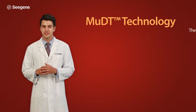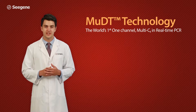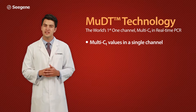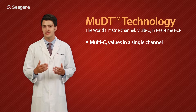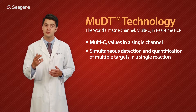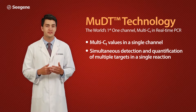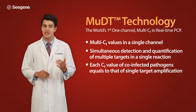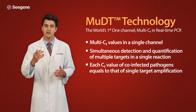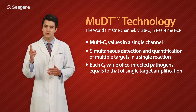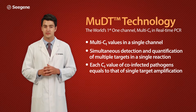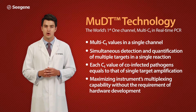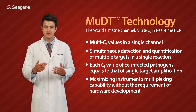MUDT technology — the world's first one-channel, multi-CT in real-time PCR. Multi-CT values in a single channel allow simultaneous detection and quantification of multiple targets in a single reaction. Each CT value of co-infected pathogens equals that of single-target amplification, maximizing instruments' multiplexing capability without the requirement for hardware development.